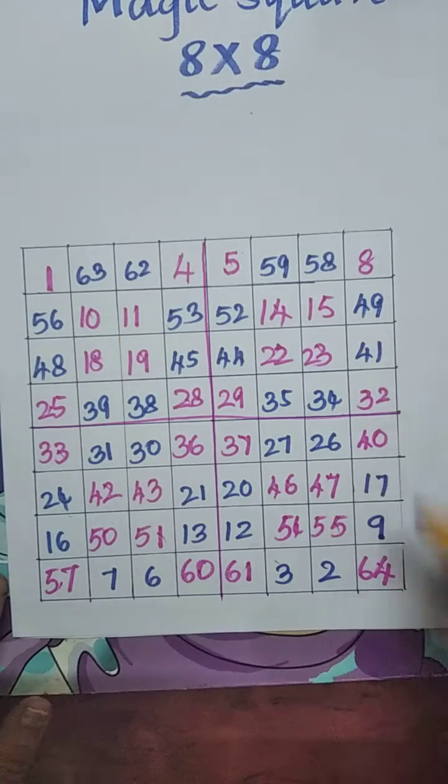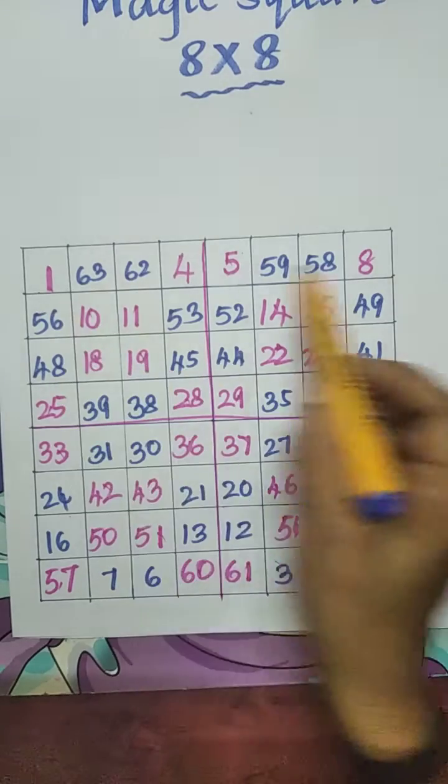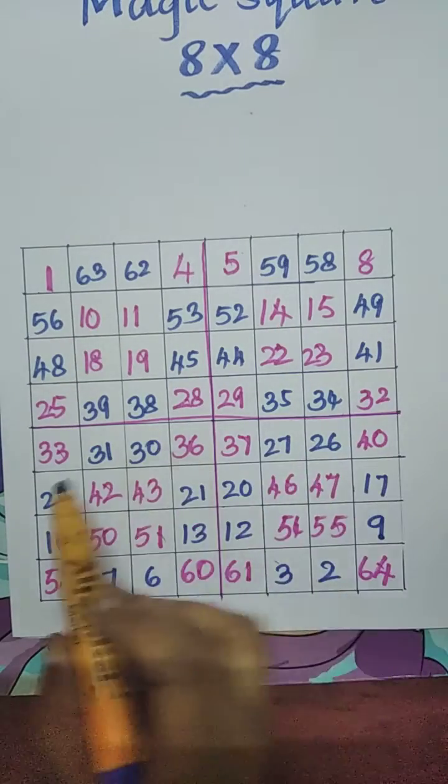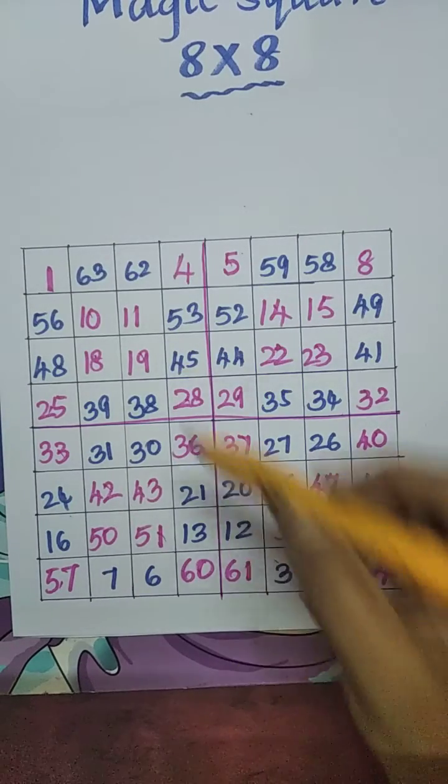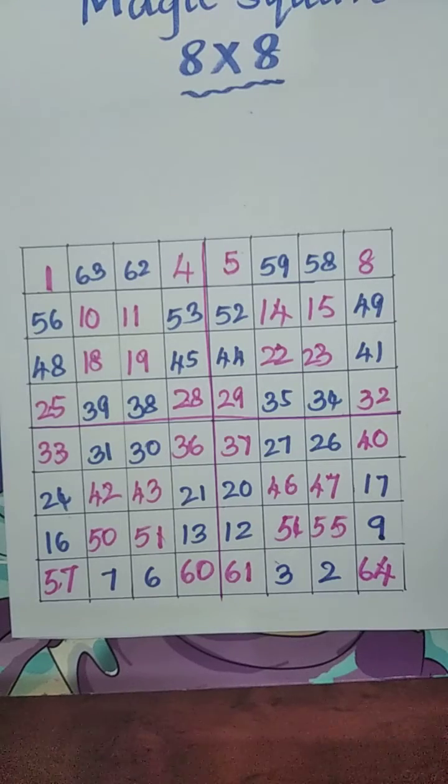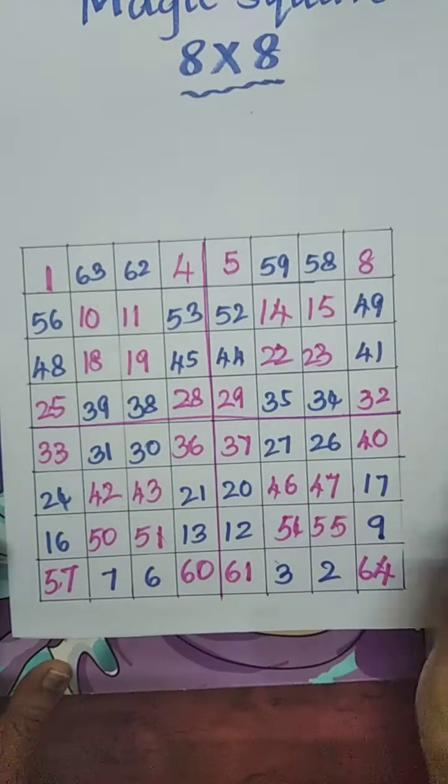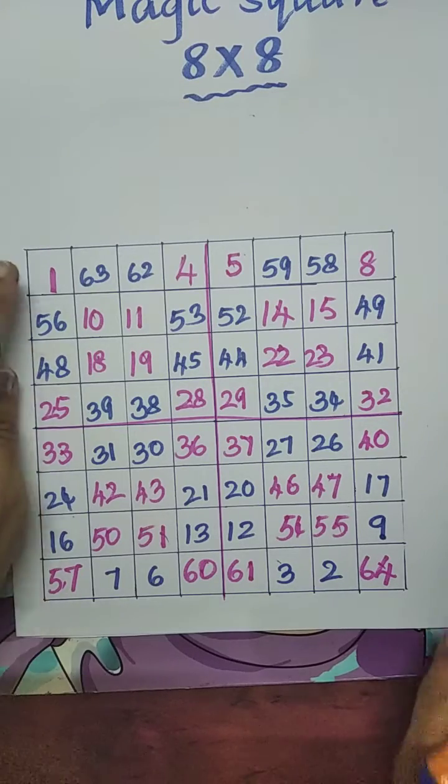All the boxes are filled now. Now we have to calculate row wise or column wise or diagonal wise. Let us check row wise. We have to find out their sum.